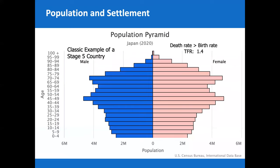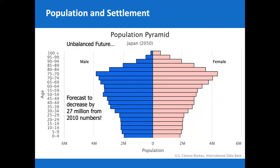Japan's population pyramid shows a birth rate of 1.4 — a classic Stage 5 country, meaning shrinking. Successive cohorts get smaller as you approach age zero. Japanese women live longer than any population on Earth — statistically, if you meet a woman age 95 or older, chances are she's Japanese. Japan in 2050 is forecast to shrink by about 27 million people from 2010.